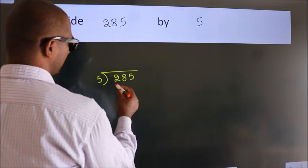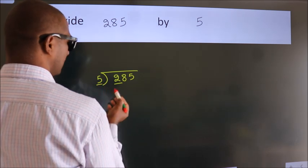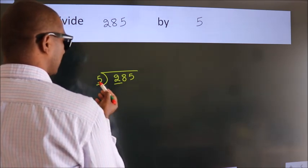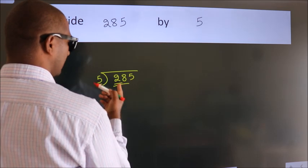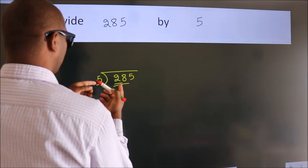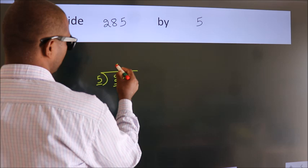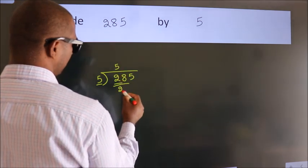Here we have 2, and here 5. 2 is smaller than 5, so we should take 2 numbers: 28. A number close to 28 in the 5 table is 5 5s, which is 25.